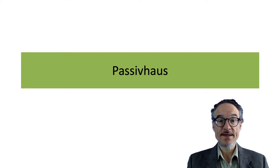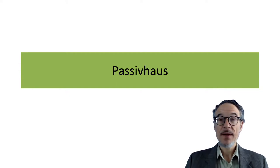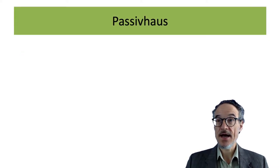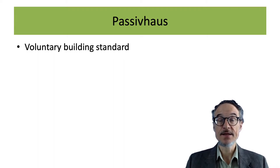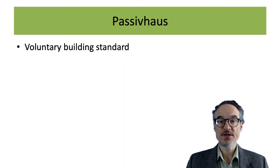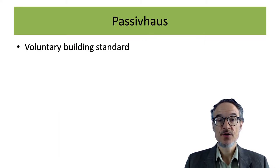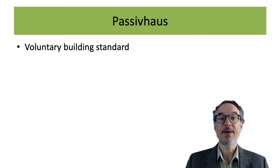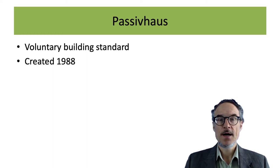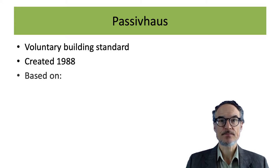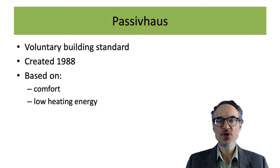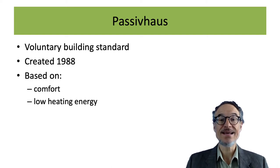One example of a building standard is Passive House. Passive House is a voluntary building standard, although it's being used in some European countries for the national standards, or the standards are based on Passive House. It was created first in 1988, and it's based on two things: comfort and low heating energy.